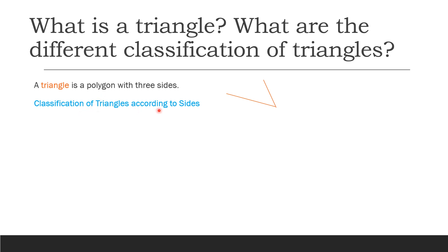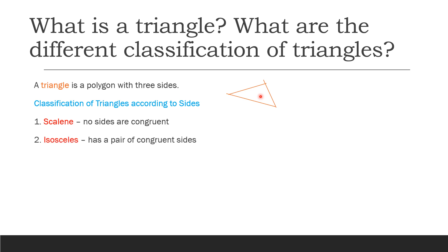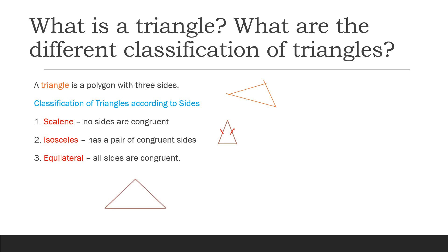Classification of triangles according to sides: We have the scalene triangle — no sides are congruent. This is an example of a scalene triangle. We have the isosceles triangle — it has a pair of congruent sides. These sides are congruent. Next, we have the equilateral triangle — all sides are congruent. These sides all have the same measurement.